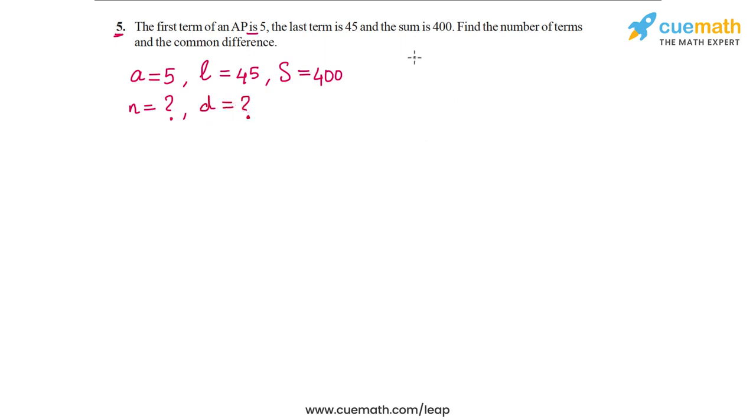So we are going to first use the relation for S in terms of A and L because they are given to us, the first and last term. So S is equal to N by 2 times A plus L. So this is what we are going to use and this will give us the value of N. So let's plug in the values.